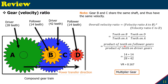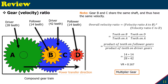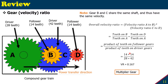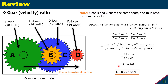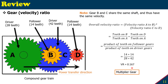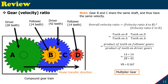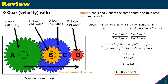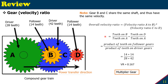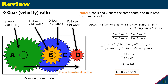Plugging in the values: the follower gears are the yellow gear with 14 teeth and the red gear with 14 teeth, giving a product of 14 times 14. The driver gears are the green with 28 teeth and the blue with 42 teeth, giving 28 times 42. The overall velocity ratio becomes 0.167, which is less than 1, confirming it's a multiplier gear — the speed from the driver to the follower increases. Note that gears B and C, the yellow and blue gears, have different teeth counts but sit on the same shaft, so they have the same velocity. Gears on different shafts will have different velocities.